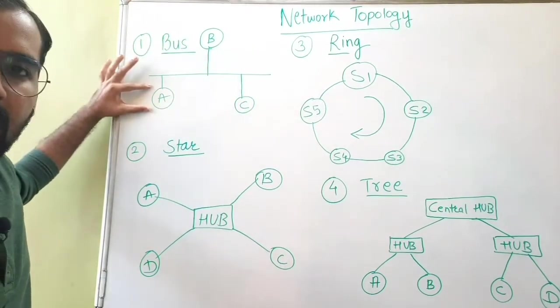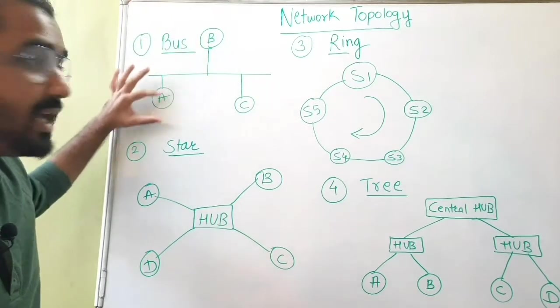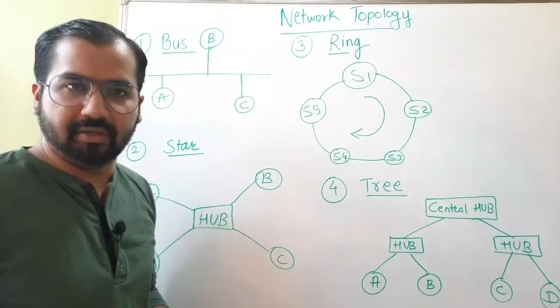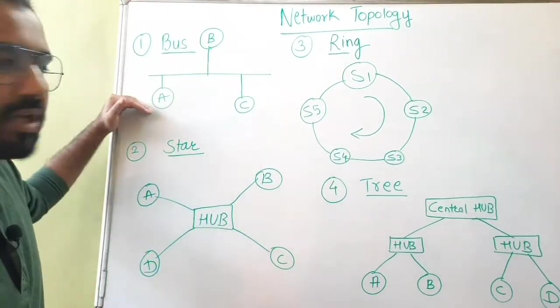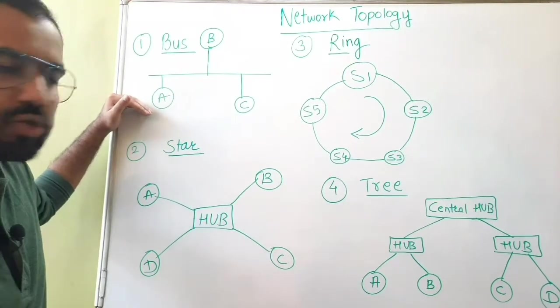So this is a backbone cable to which your different devices, we can say nodes, are connected to it. Now what happens here is that whatever the messages or data that has to be transmitted in the bus topology, it is going to be in one direction.